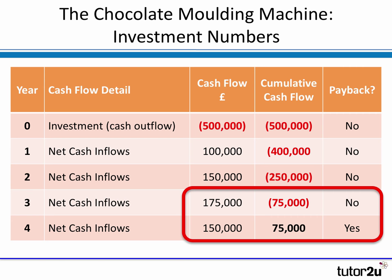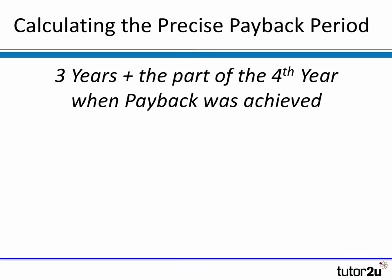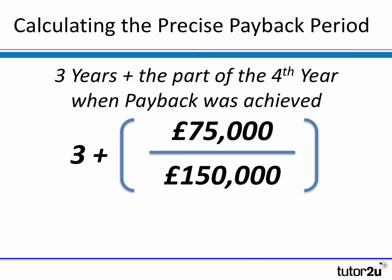There's a bit of maths to follow up so you can calculate the precise payback period. We know it's three years because we haven't reached payback by the end of year three, and we know it's some way during year four. The way to calculate this is to simply divide the required cash to reach payback — in this case £75,000 — by the total cash flow in during that period, which is £150,000, and add it to the year total, which was three.